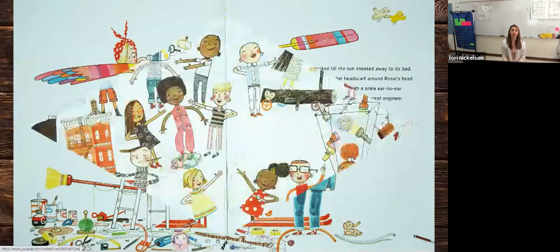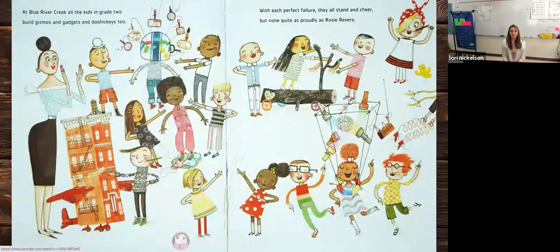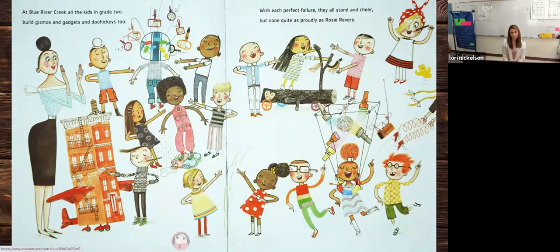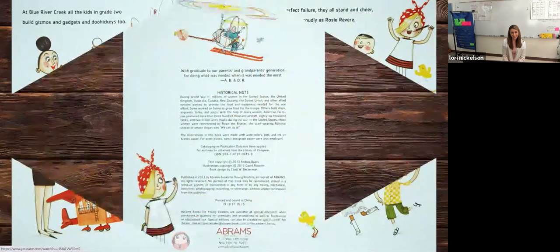At Blue River Creek, all the kids in grade two build gizmos and gadgets and doohickeys too. With each perfect failure, they stand and cheer, but none quite as proudly as Rosie Revere. The end.